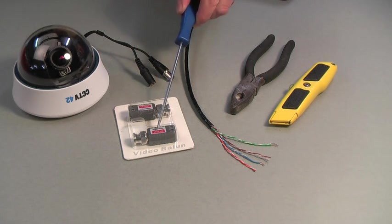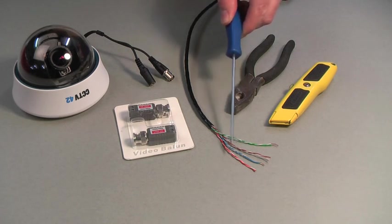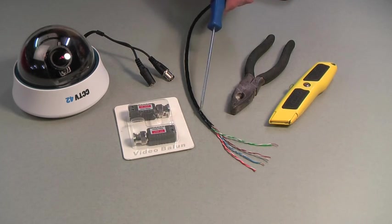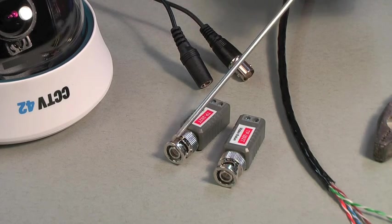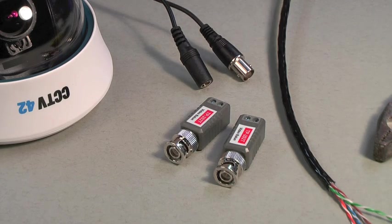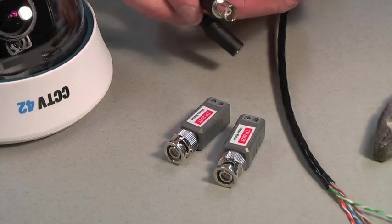You'll need a pair of baluns and also some Cat5 cable. If we look at a balun in detail we can see how one end has a standard BNC female connection and the other end has some screw terminals.